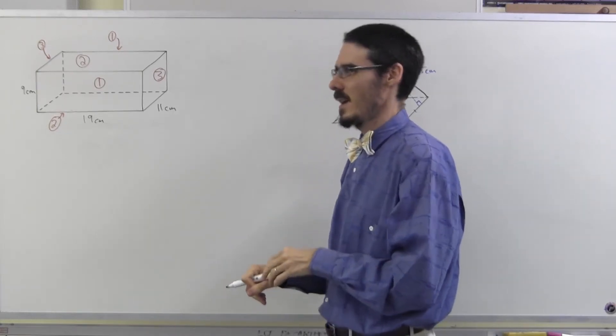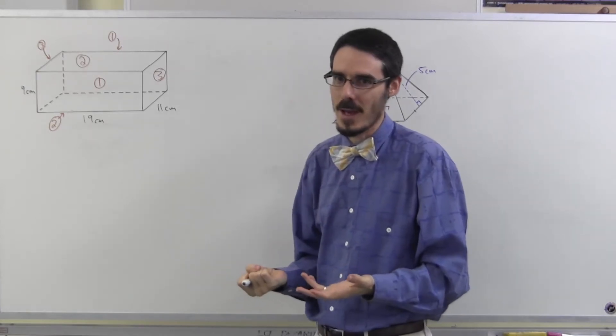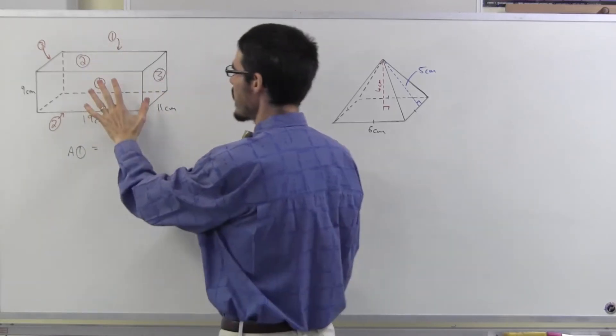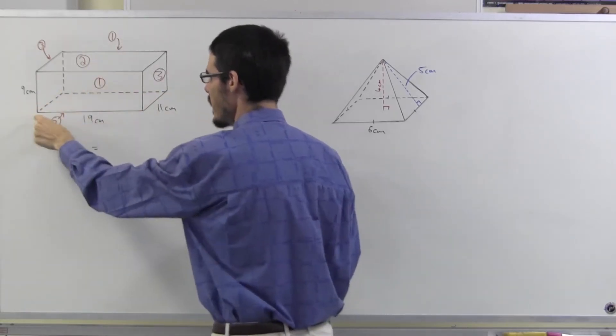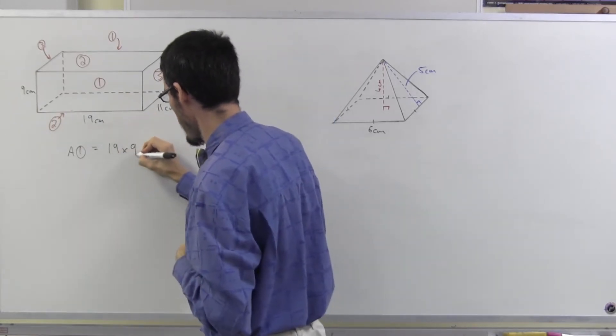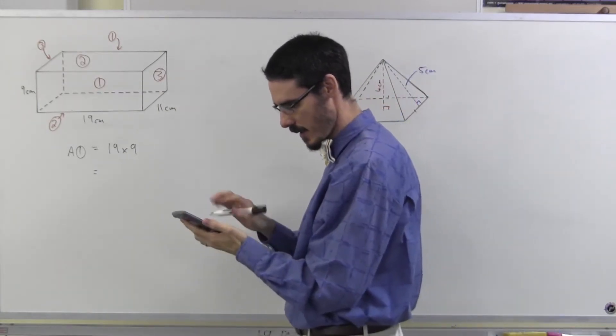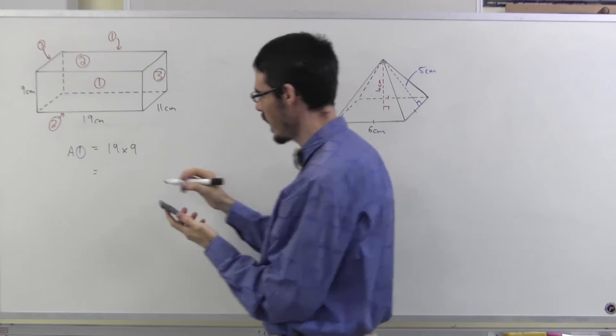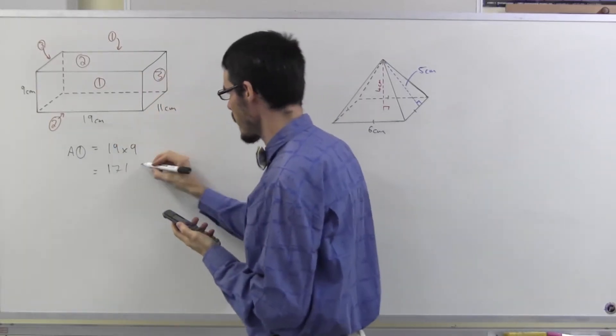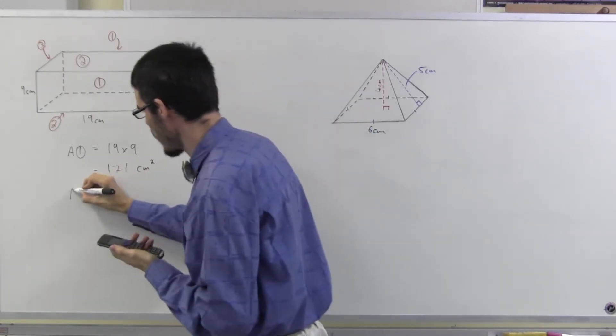And then we're just going to systematically work each one out. Now, each rectangle, they're rectangles. I'm not going to bother even writing length times width for the area. We know that. So area one is going to be, that's the front and the back, 19 by 9. Which my calculator tells me is, I'll turn it on, 19 times 9, 171 square centimeters.